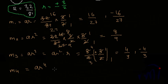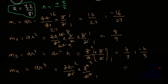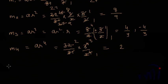M4 = AR⁴ = (32/81) × (3⁴/2⁴). Since 3⁴ = 81, the 81s cancel, and 2⁴ = 16, so 32/16 = 2. The value of M4 = 2, and it is always positive because r is raised to an even power.